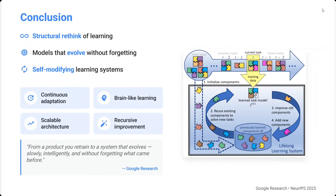In conclusion, there is a structural rethink of learning — models that evolve without forgetting and self-modifying learning systems are emerging. This is what Google Nested Learning is all about. This video is just an overview of how it differs from basic machine learning and how different segments of the model are updated differently. Hope you get a chance to read the blog — let me know in the comments what you understand about machine learning and nested learning. Thank you!